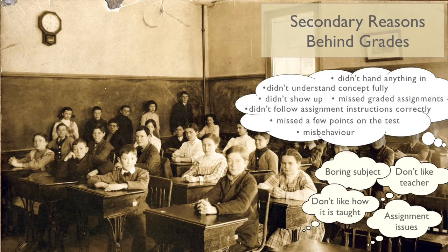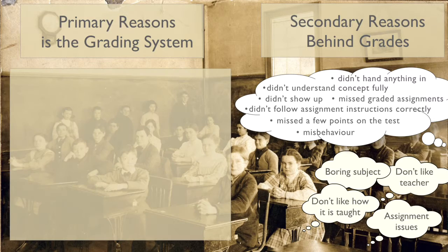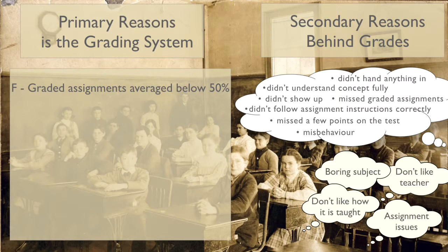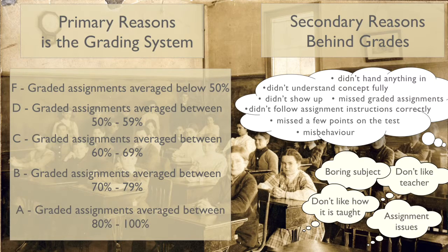Those student and teacher concerns are actually secondary reasons behind the grades. The primary reason is actually the grading system itself. Why does a student get an F? Because the graded assignments averaged below 50. A D is between 50 and 59, a C between 60 and 69, a B between 70 and 79, and an A is between 80 and 100. Your numbers might change a little bit, but that's the primary reason for why students get the grades they do — the math involved. I'm not saying the secondary reasons don't matter, but I need to keep those primary reasons in mind.